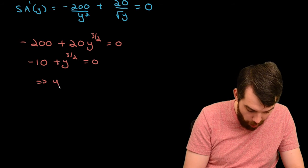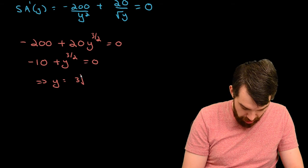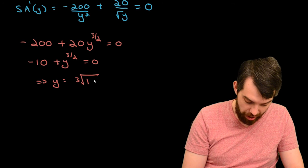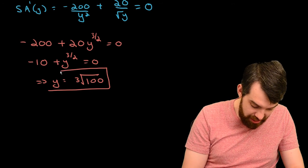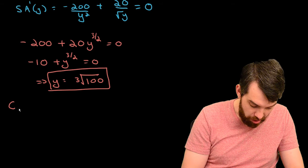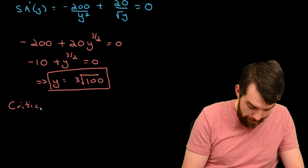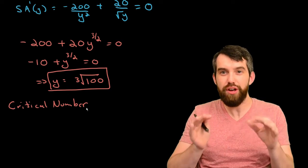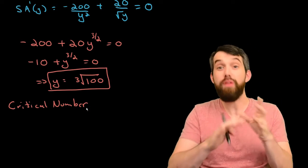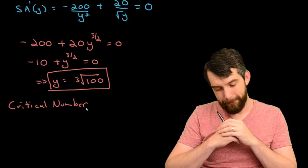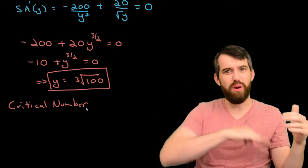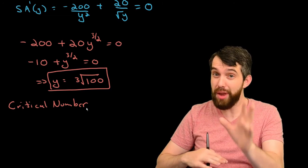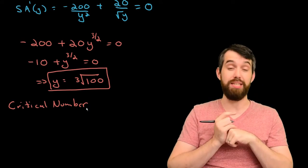Alright, so this here is my critical number. It is the value of y where the derivative is equal to 0. But is it a minimum? Is it a maximum? Is it one of these ones that goes up and flattens out and carries on? We don't know. We've got a critical number. But we still have to investigate whether it truly is a minimum.